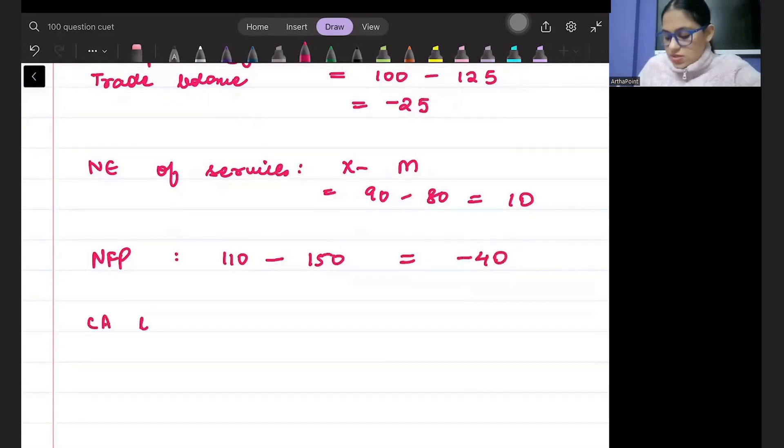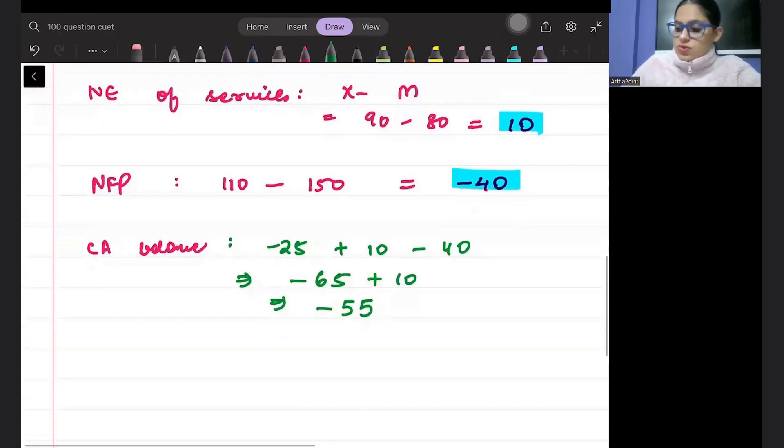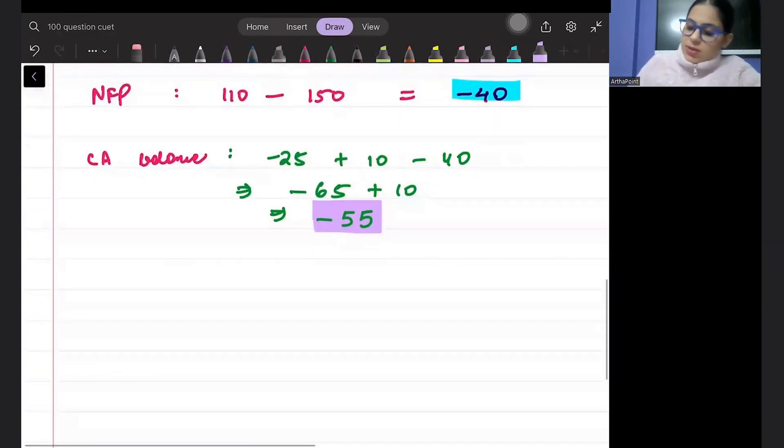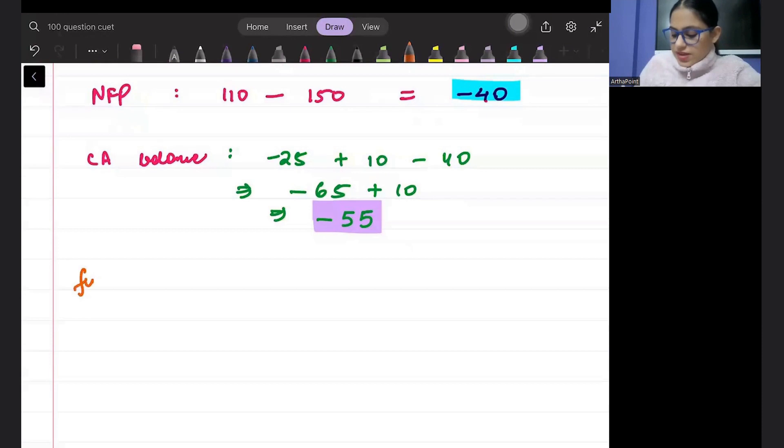Peter, what will be current account balance? We have to sum this. So minus 25 plus 10 minus 40. So Peter, this is going to be minus 65 plus 10 minus 50. This is going to be minus 50. Clear hoa, Peter? Am I clear with this, everyone? Okay Peter, now we will see financial account.